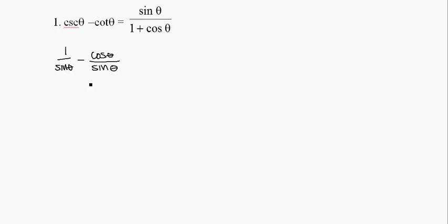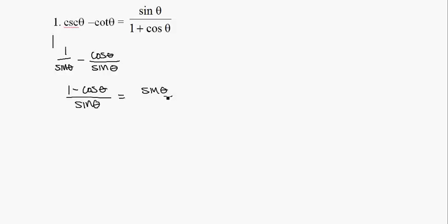Since I have a common denominator, I can just rewrite it as cosine theta over sine theta. And here's a no-no — it looks like it'd be a great idea to just cross-multiply, and I would be all done. Unfortunately, that's illegal, so you cannot cross-multiply — don't do that.